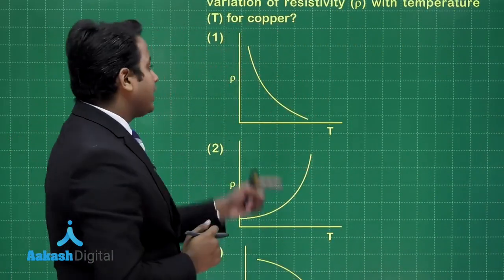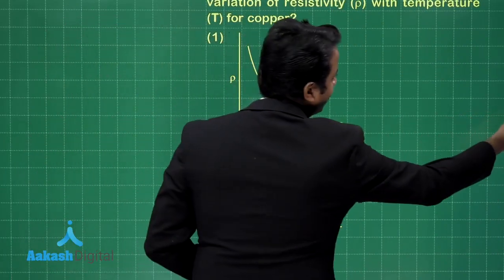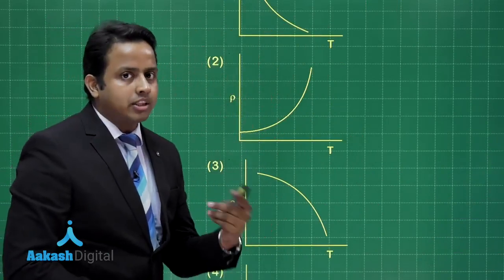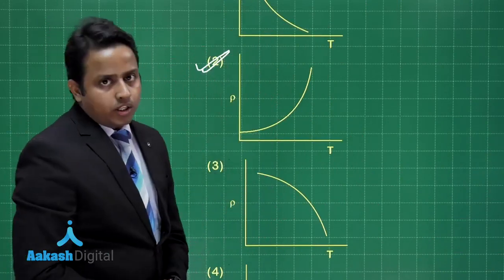The first graph is representing the resistivity of semiconductors with temperature. So, this cannot be for copper. Second graph, it is showing the parabolic increase in resistivity with temperature. So yes, option number 2 is the correct choice for this question.